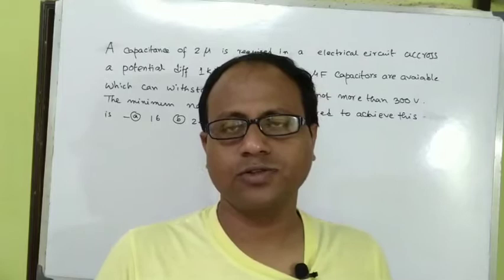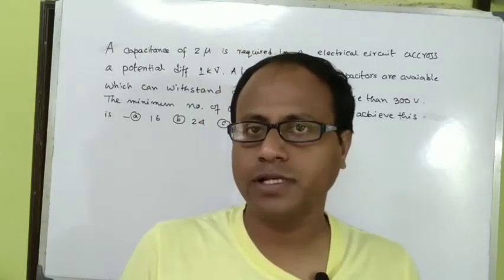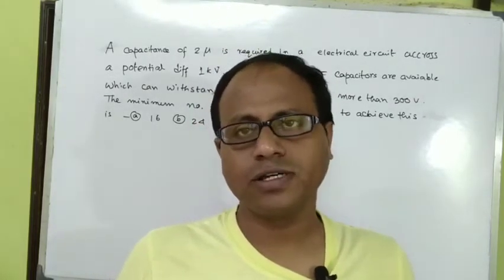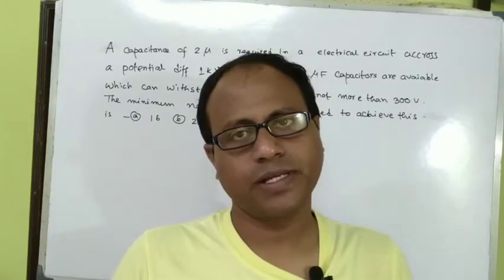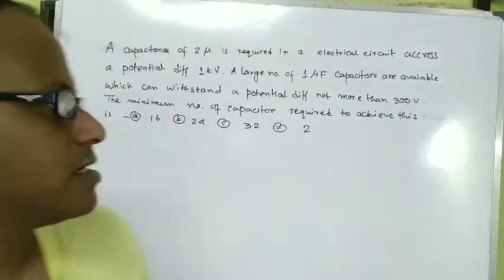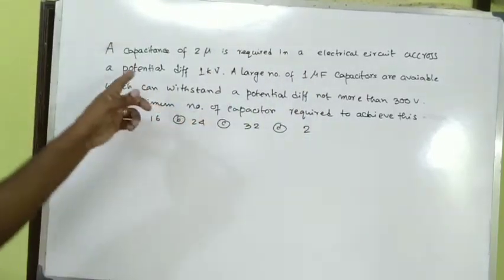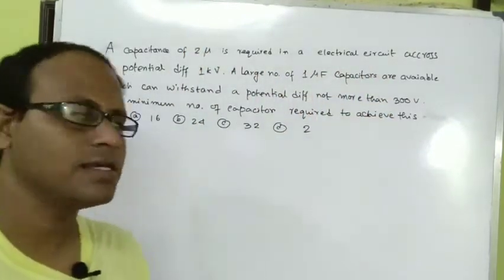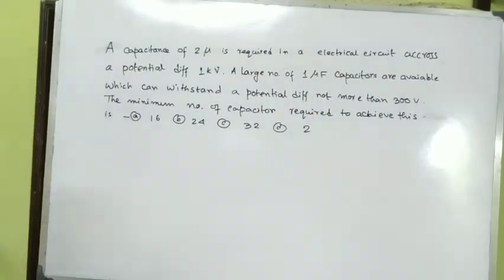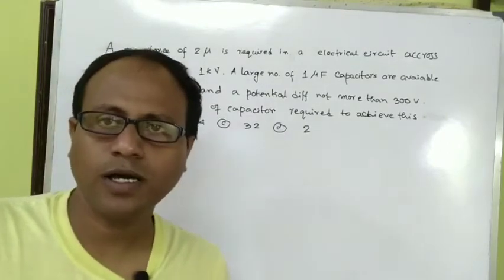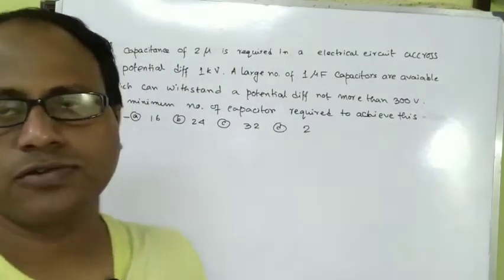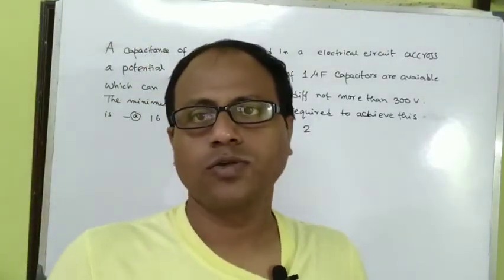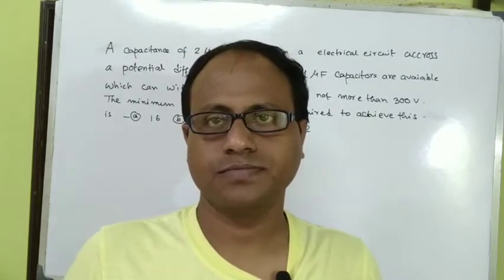The voltage across the capacitors - we need 1000 volts total. The given voltage is 1000 volts, the potential difference across the system. So we need to determine how to connect the capacitors.